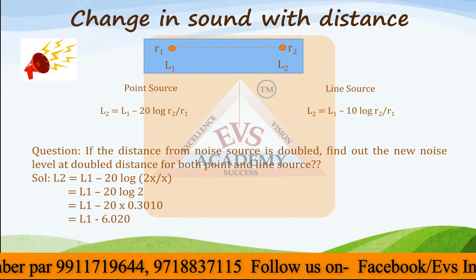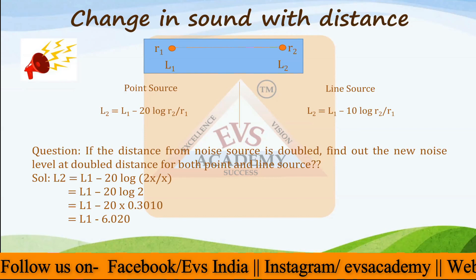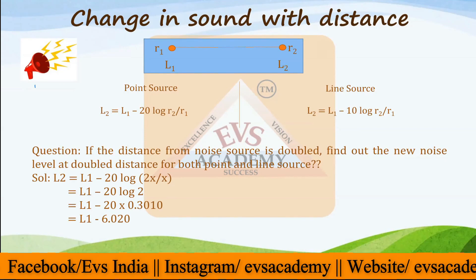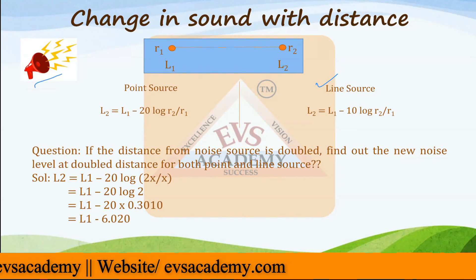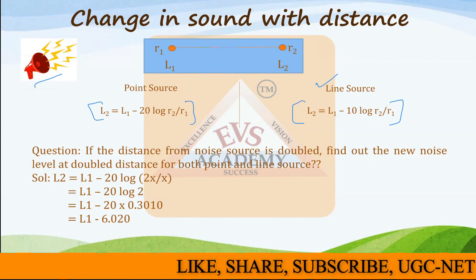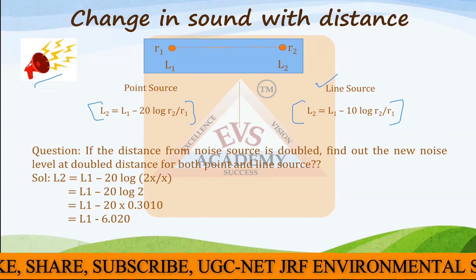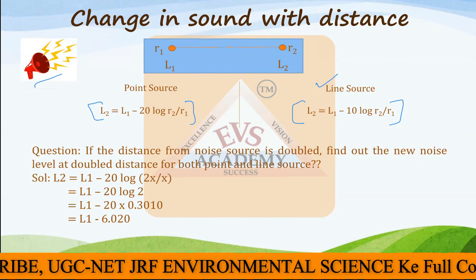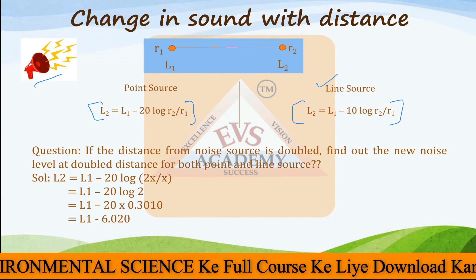There are two types of noise sources. One is the point source, which has only one source of noise. The other is the line source, which has multiple sources of noise — for example, traffic. We have seen that by calculating values for both point source and line source using the formulas on screen, the sound level with doubling the distance decreases by six decibels in the point source and by three decibels in the line source.